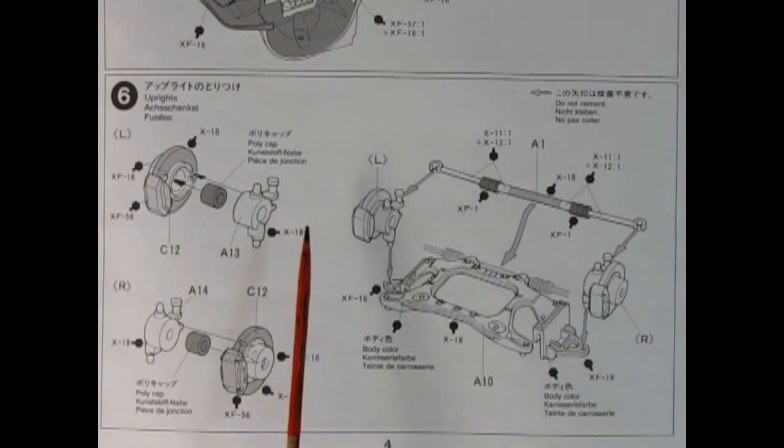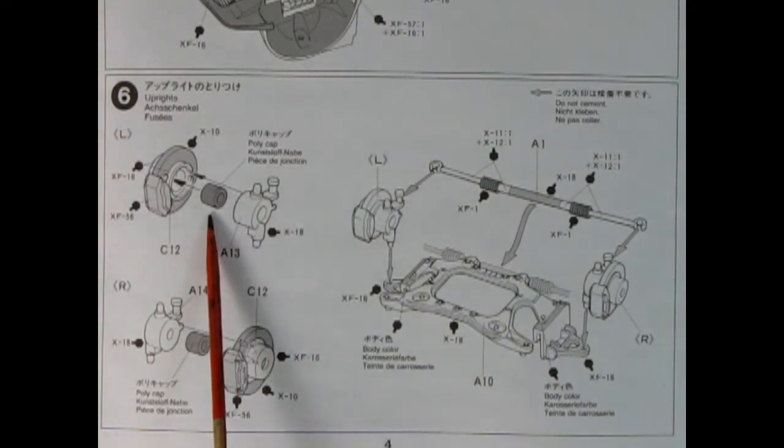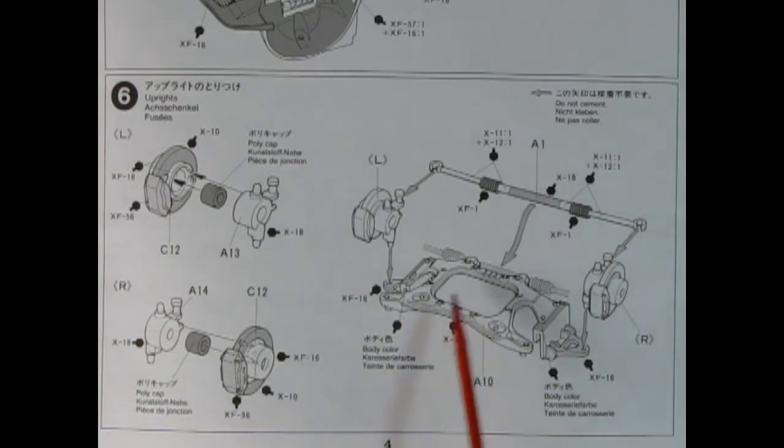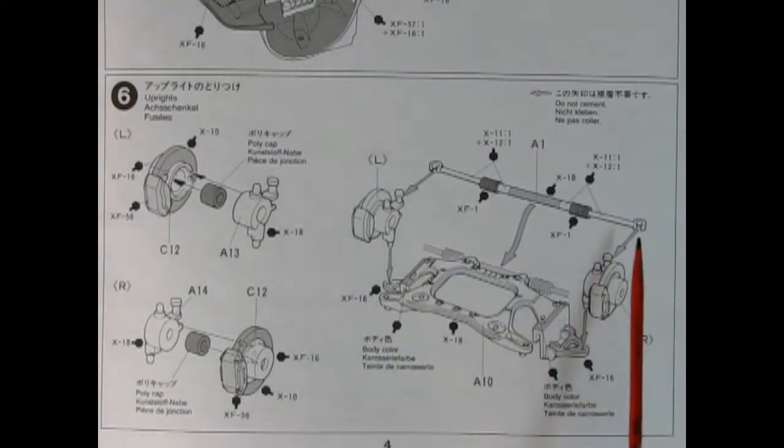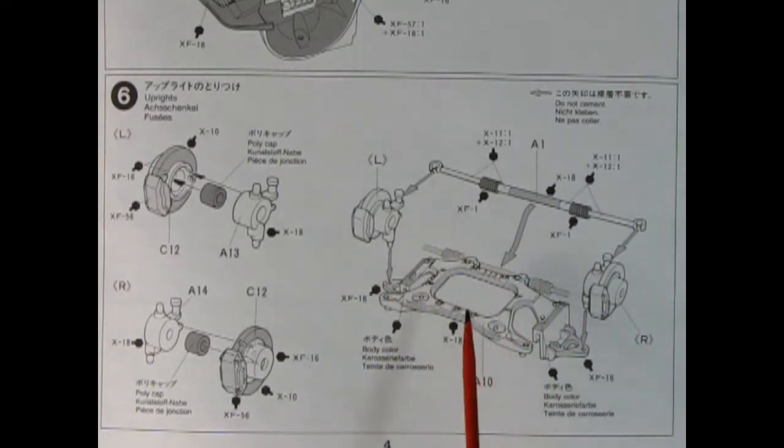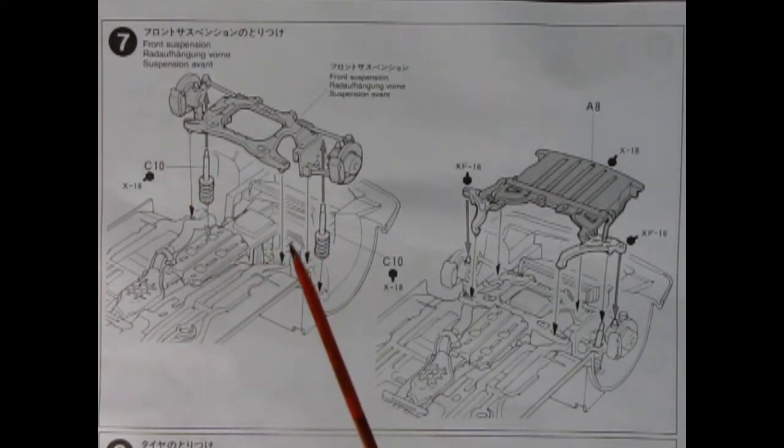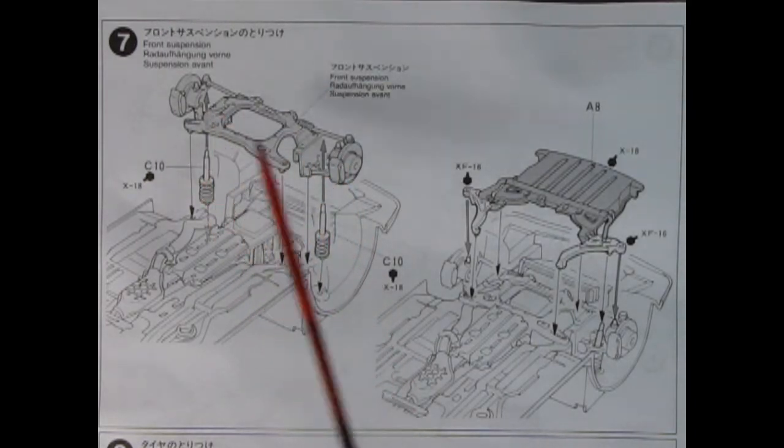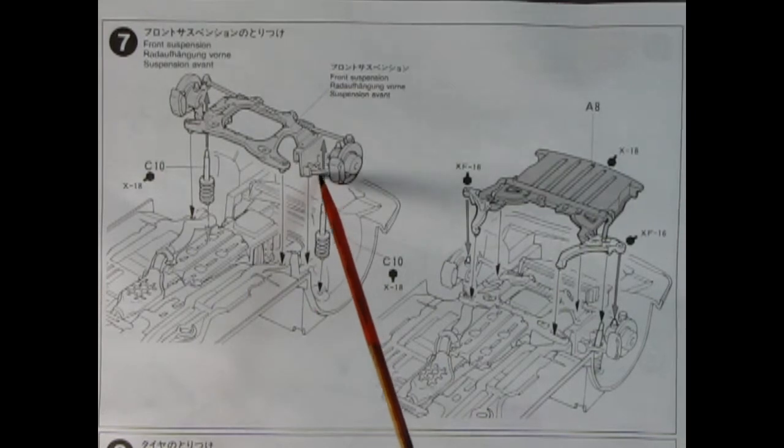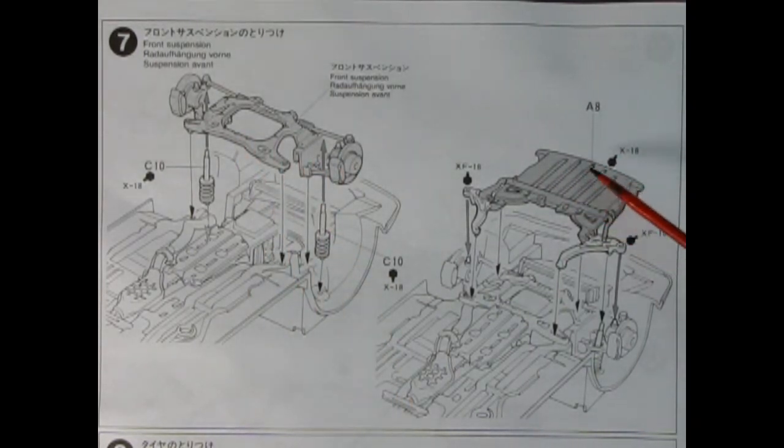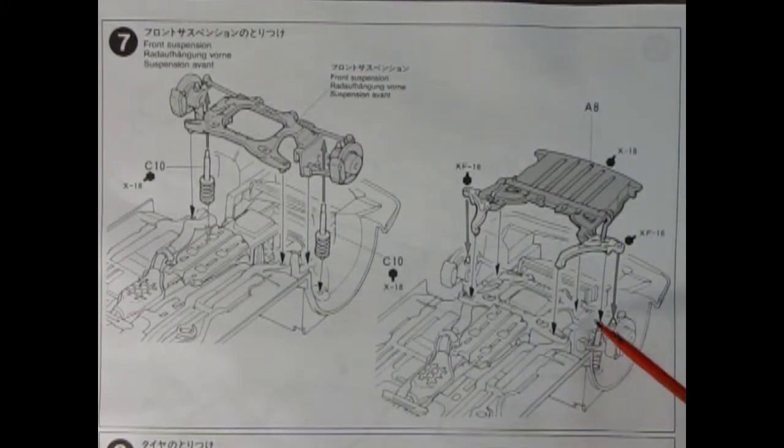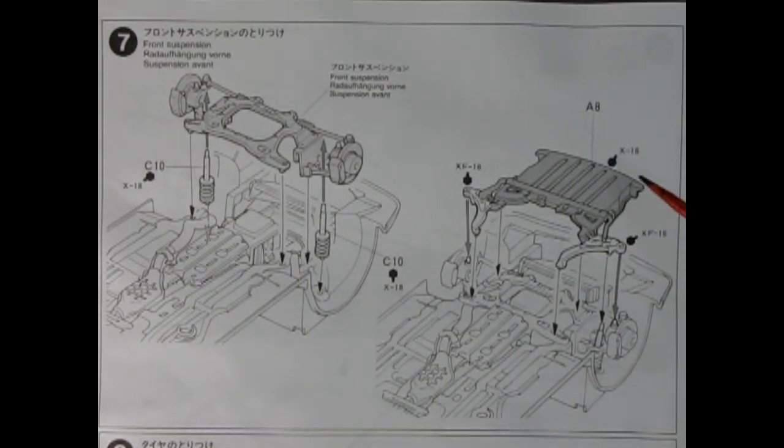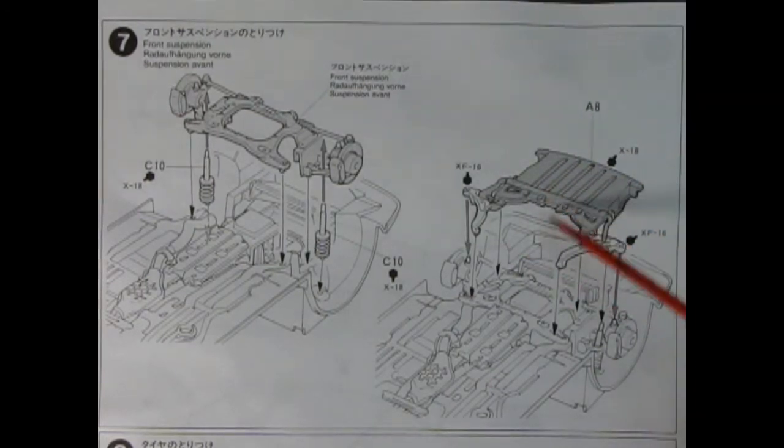Panel six shows our front end going together. You've got your kingpins and the rubber style poly cap. Then you've got your front disc brakes with calipers. You pop them into this A-arm assembly and there's your tie rod back there with the rack and pinion style steering. Panel seven shows our front axle assembly being dropped down into the chassis. First you put on your McPherson struts. Then you get the top plate which mounts down on the tips of the McPherson struts. This is a guard to protect the engine from stones underneath.